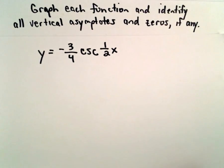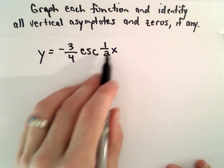Okay, in this example we're going to graph y equals negative three-fourths times cosecant of one-half x.